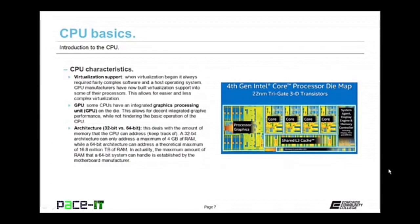Last but not least under CPU basics is architecture — either 32-bit or 64-bit. This deals with the amount of memory a CPU can address. A CPU with a 32-bit architecture can only address a maximum of 4 gigabytes of RAM, while a CPU with a 64-bit architecture can address a theoretical maximum of 16.8 million terabytes of RAM — that is just a ton of RAM. In actuality, the maximum amount of RAM a 64-bit system can handle is established by the motherboard manufacturer.